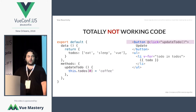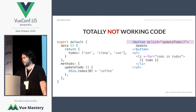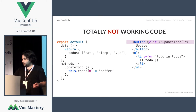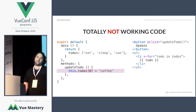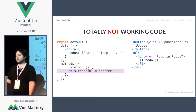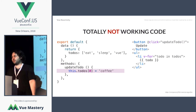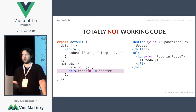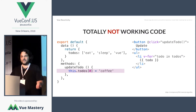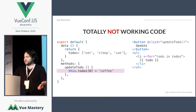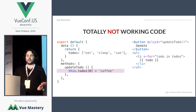How about this, though? What if we wanted to actually modify one of those to-do elements? We want the button to update that first to-do from 'eat' to 'coffee,' because coffee is more important than food in my life — maybe yours as well. But this doesn't work. And why isn't it working?